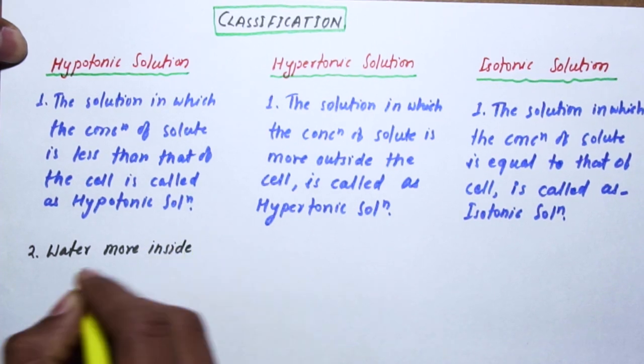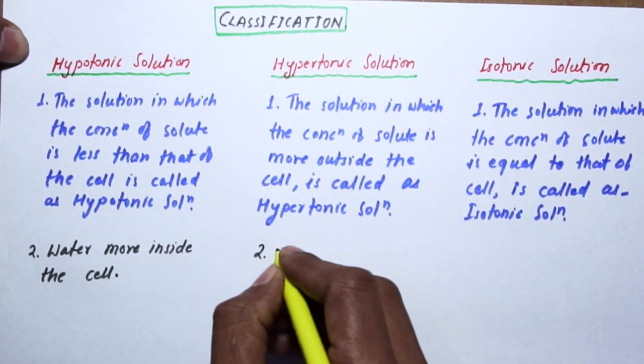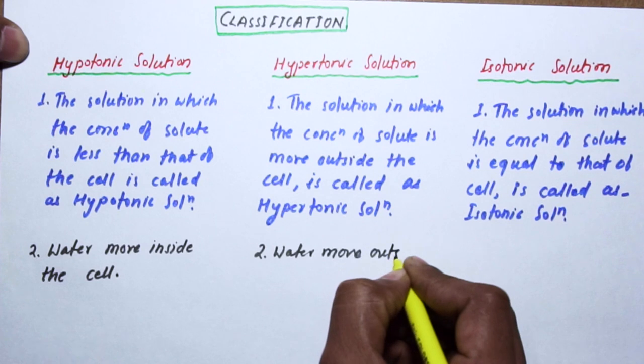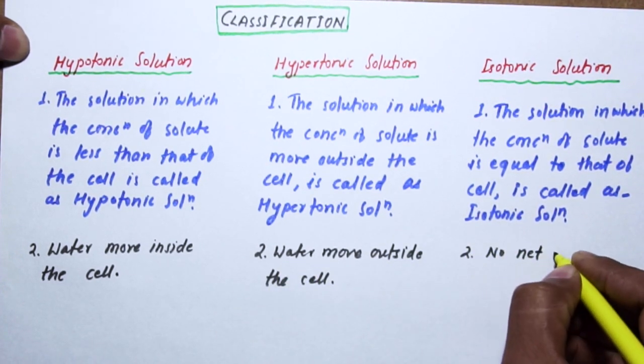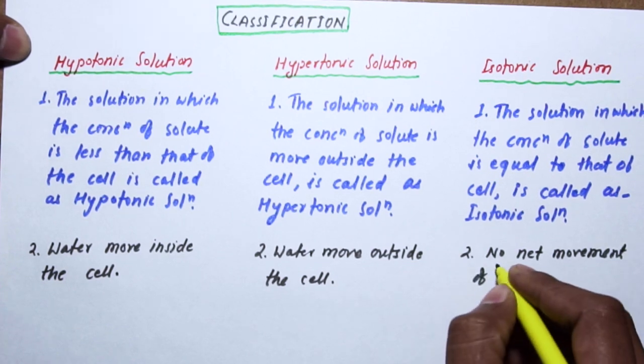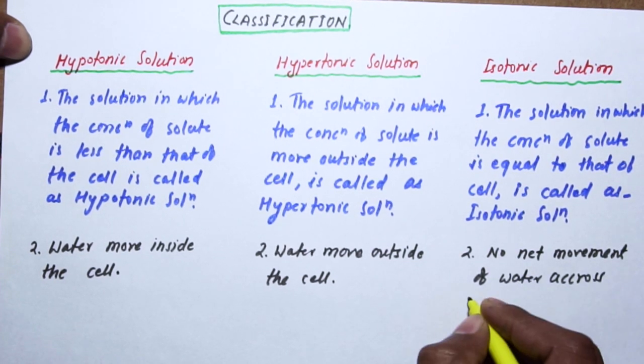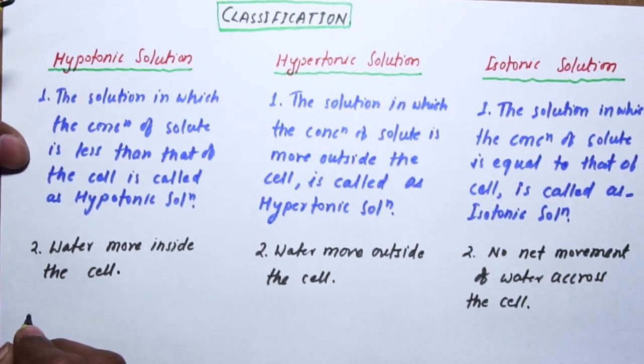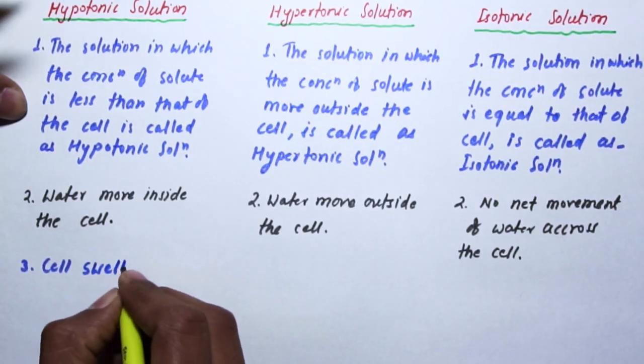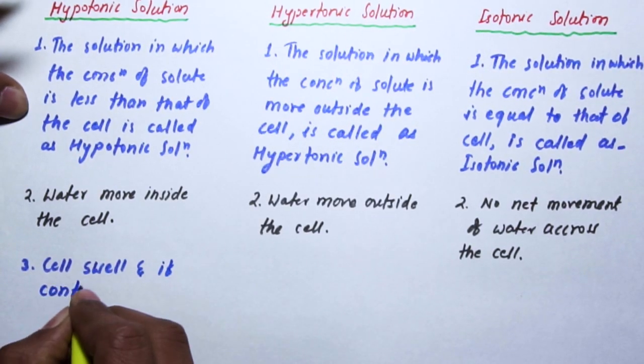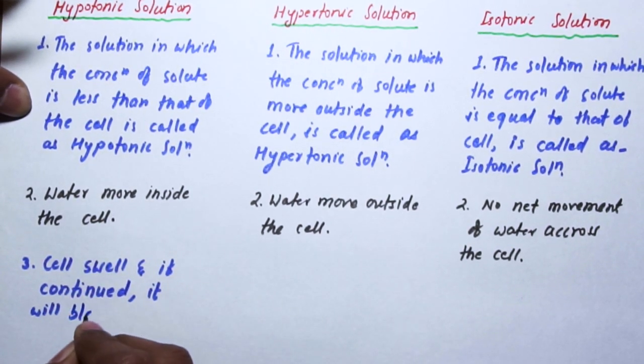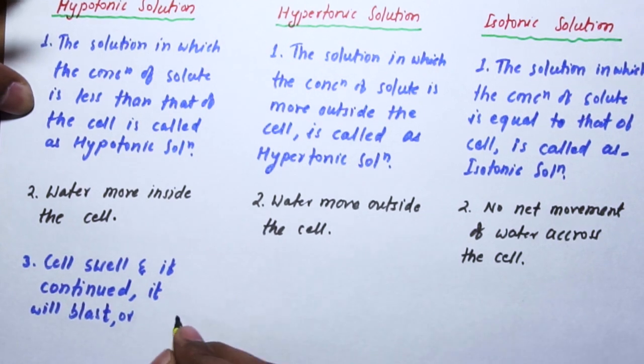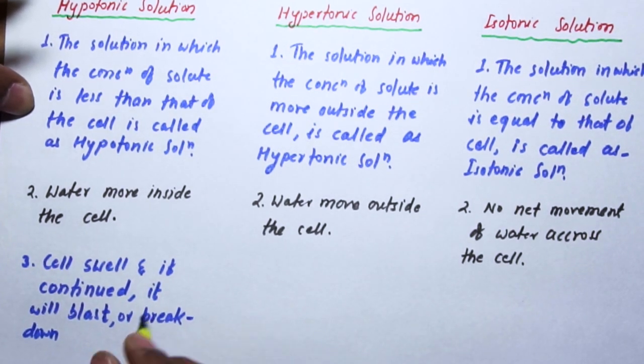In hypotonic solution, water moves inside the cell. In hypertonic solution, water moves outside the cell. In isotonic solution, there is no net movement of water across the cell.